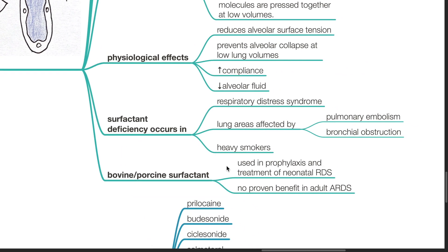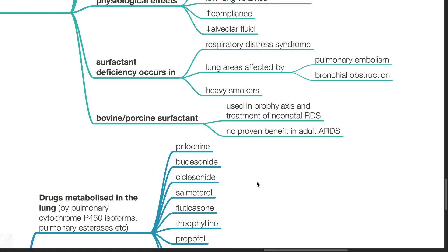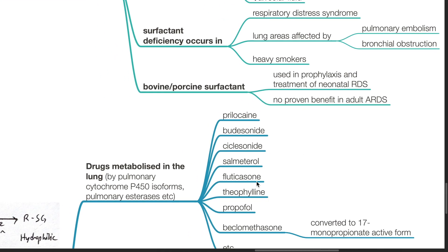Surfactant deficiency occurs in respiratory distress syndrome, lung areas affected by pulmonary embolism and bronchial obstruction, and in heavy smokers. Bovine or porcine surfactant is used in prophylaxis and treatment of neonatal RDS, however it has no proven benefit in adult ARDS.